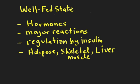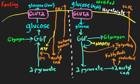Starting with the big picture, we have a typical liver cell diagram divided into two parts. On the left is the fasting state; on the right is the well-fed state. Focusing on the right side, we can see glucose entering the liver cell through glucose transporter 2 via facilitated diffusion.